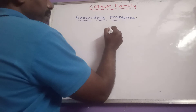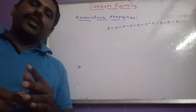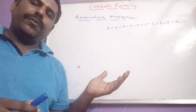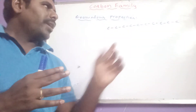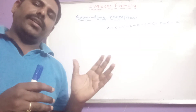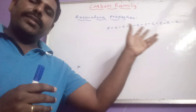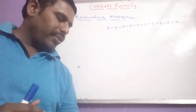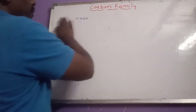Carbon also shows catenation ability — carbon atoms join together with one another extending to an infinite chain length. In other 4th A group elements, this catenation ability is limited. In silicon, catenation extends up to only 8 atoms, not to infinite order. So carbon can form the longest chains, either cyclic or straight chain form, extending to infinity. These are the anomalous properties of carbon.